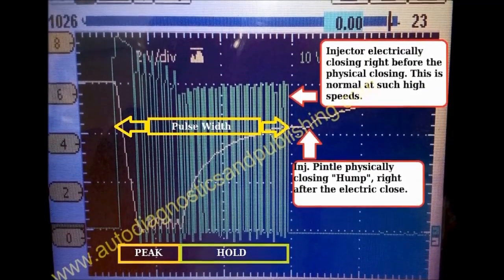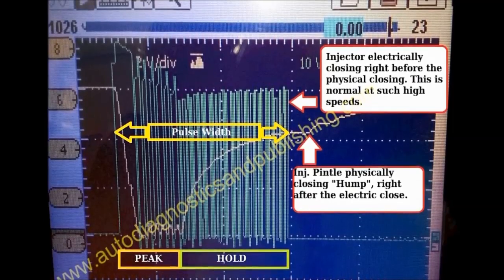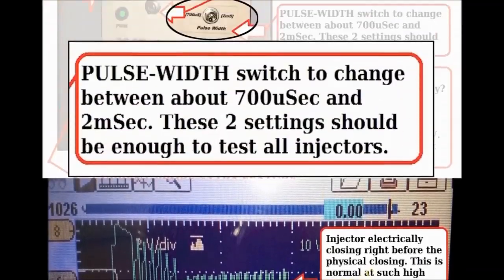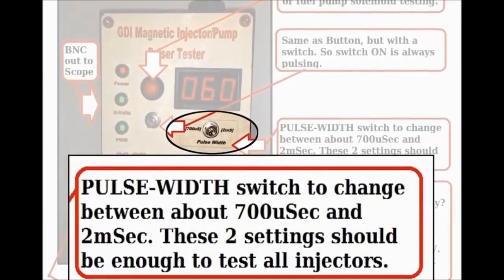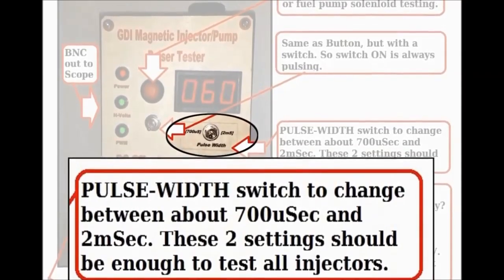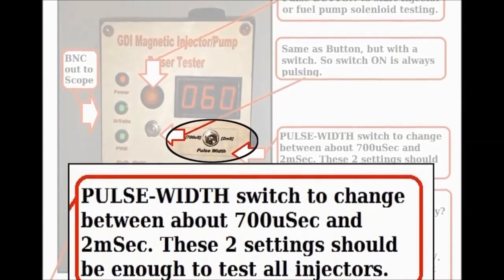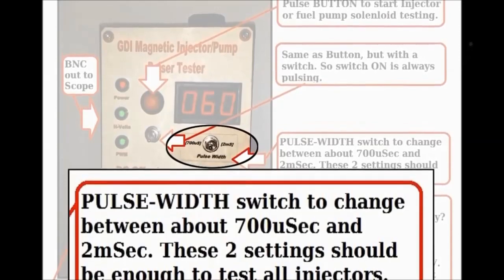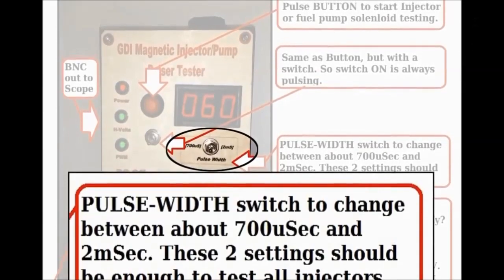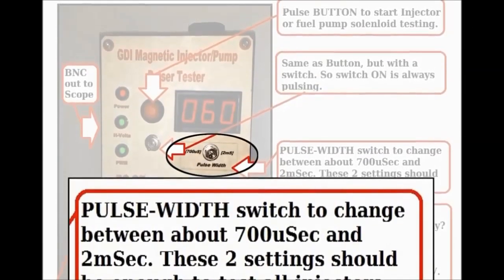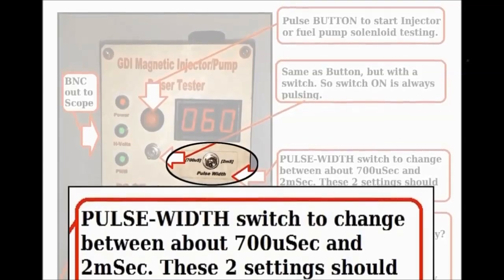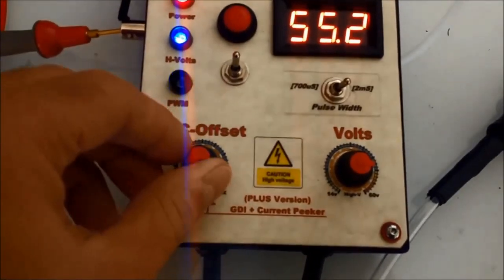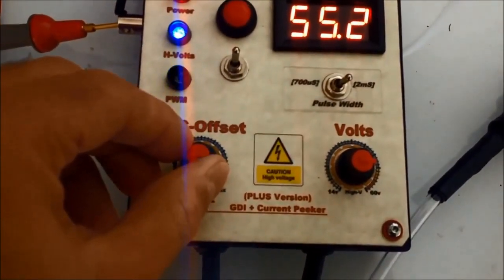If you set it to 700 microseconds, that's when you use the button and do a leak down test for a specific period of time — 5, 10, 15, or 20 seconds — and you can pretty much determine if you have a clogged injector.